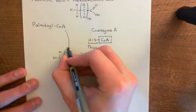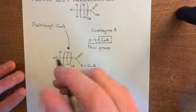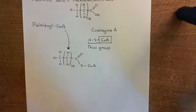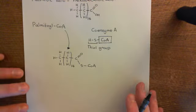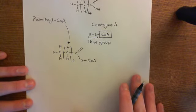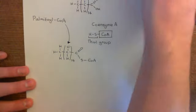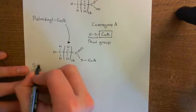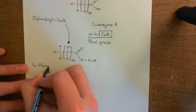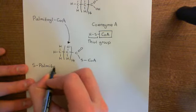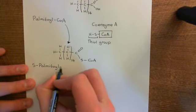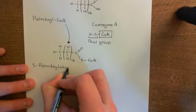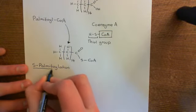The main form of palmitoylation that occurs within cells is known as S-palmitoylation, which is when you palmitoylate cysteine residues within proteins that are in the middle of the polypeptide strands.